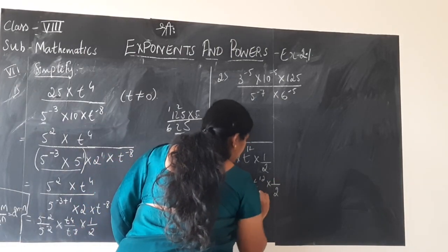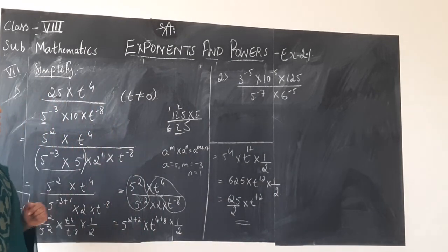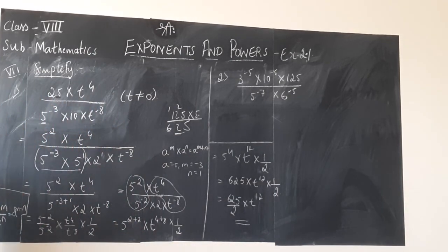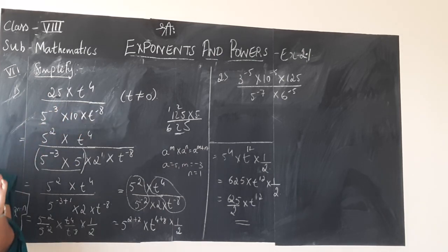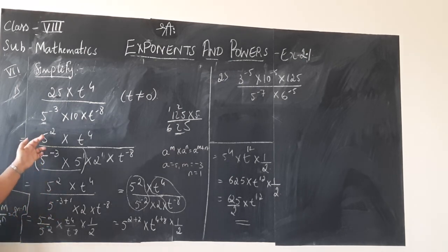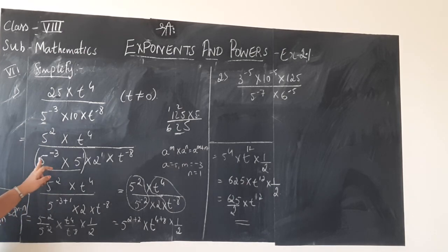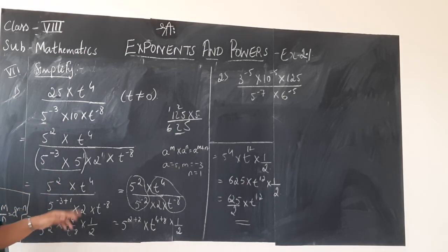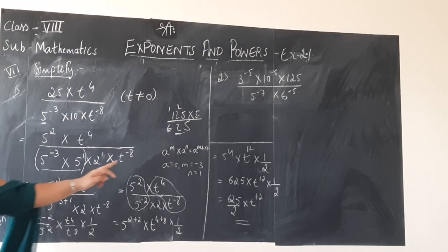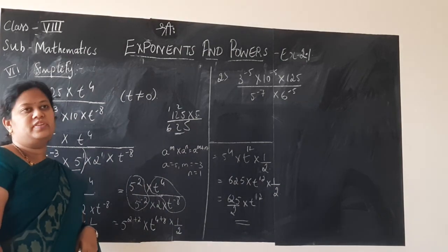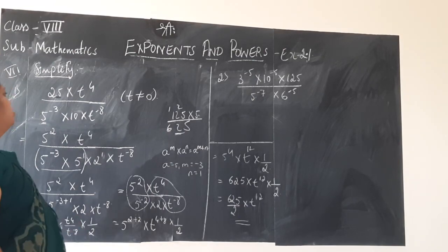Like this you have to simplify. What we did: we simplified and wrote the given bigger numbers in their simplest forms so that we get the same base values. After doing so, wherever you can apply the law and simplify, simplify and finish the step. Then again by grouping, finally simplify them. That's all — like this you have to solve.